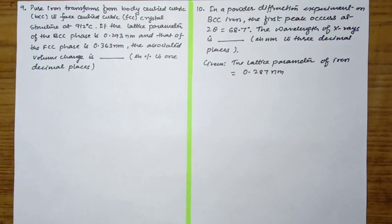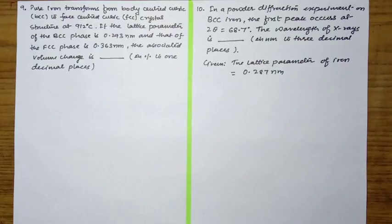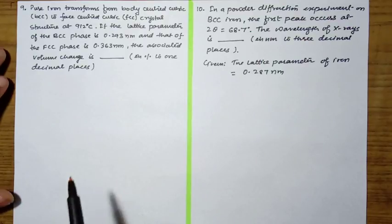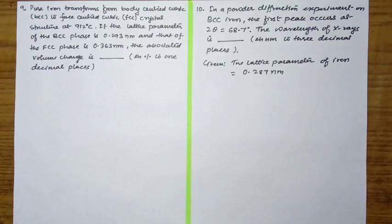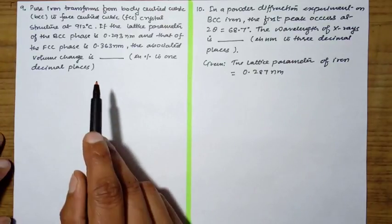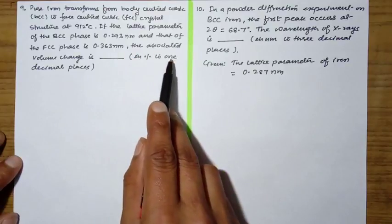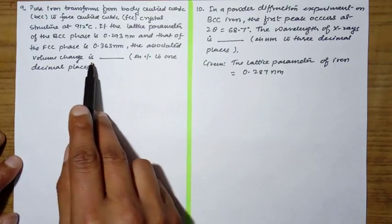The 9th question of Physical Metallurgy is: Pure Iron transformed from body centered cubic BCC to face centered cubic FCC crystal structure at 912 degrees centigrade. If the lattice parameter of the BCC phase is 0.293 nanometer and that of the FCC phase is 0.363 nanometer, the associated volume change is?